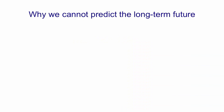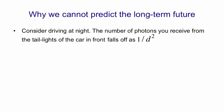I'm going to try and explain why we can't predict the long-term future by using an analogy. Imagine you're driving a car at night and you're looking at the taillights of the car in front. The number of photons that you receive from the taillights of the car in front falls off as 1 over d squared, where d is the distance to the car in front.